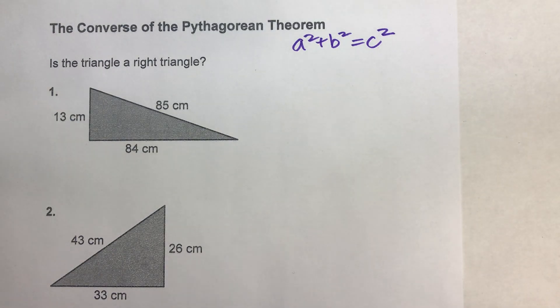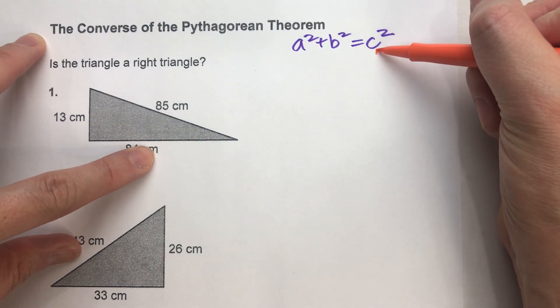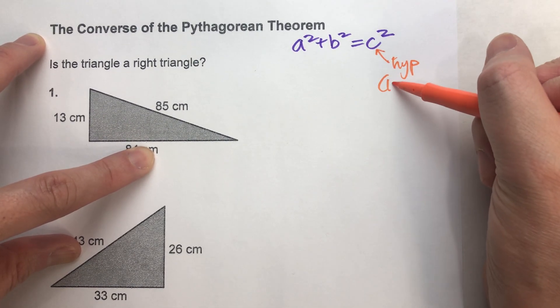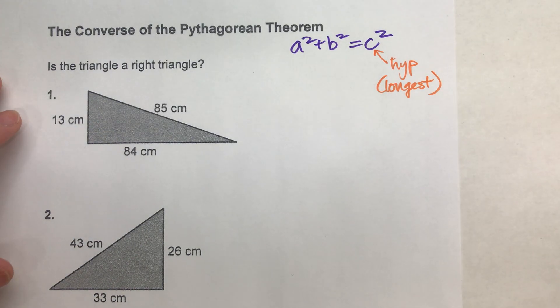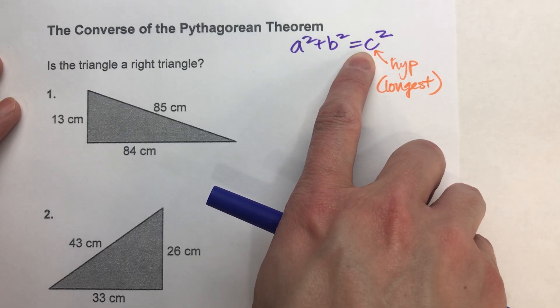The one thing you have to keep in mind, though, as you're testing it out, is you have to remember that c represents the hypotenuse, and that's the longest side. So when we're testing it out, we always have to remember to test out putting the longest side in for c.